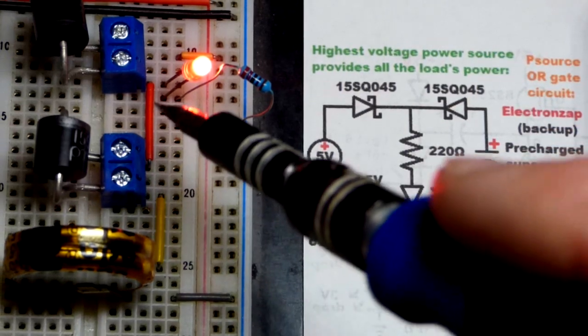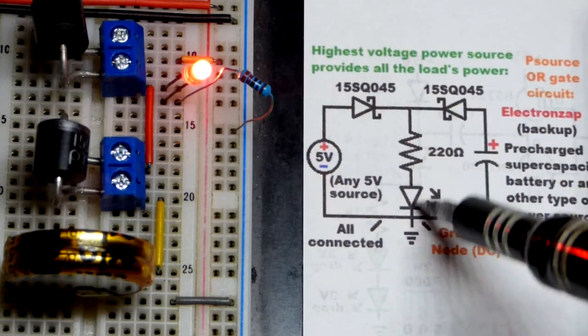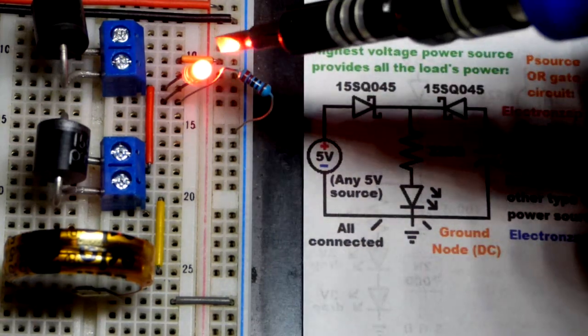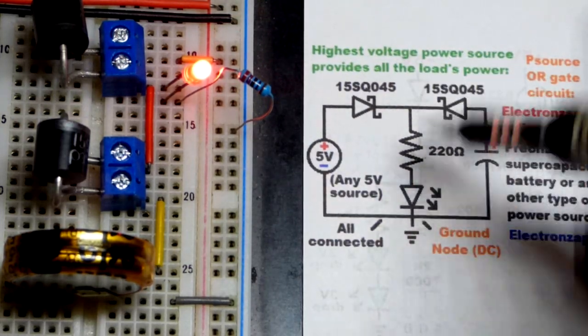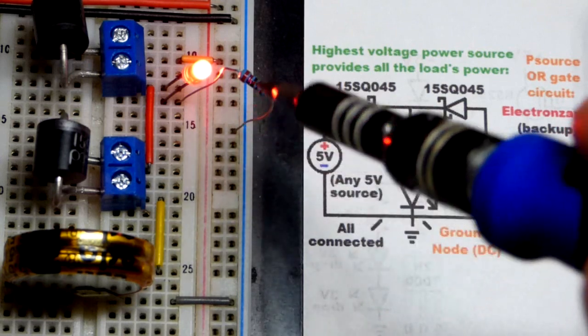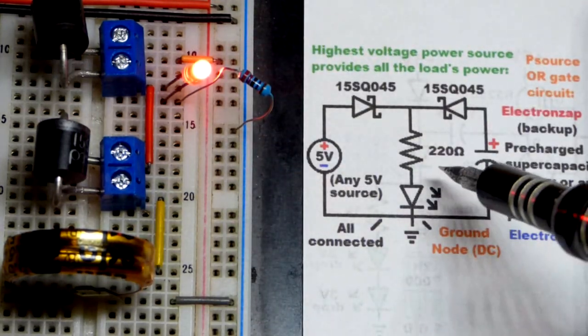I also notice the LED and the resistor are not in the same order here. The resistor is coming before the LED on the schematic here. It's the LED before the resistor. It doesn't matter as long as the LED is in the right way. It doesn't matter which one comes first. But resistors make a lot better jumpers than LEDs do. So that's why I did that.